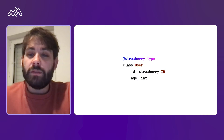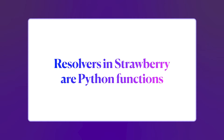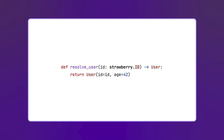Before talking about federation, let's see how we can implement resolvers using Strawberry. Resolvers in Strawberry are basically Python functions. Here we have the same user type, but let's say we also want to define a query with a getUser field. We use the strawberry.field function to add more information about a field — for example to change the name, or to add a resolver. Here we have a resolver that accepts one id and returns a user. Strawberry knows how to read arguments from functions and attach them to the GraphQL field.